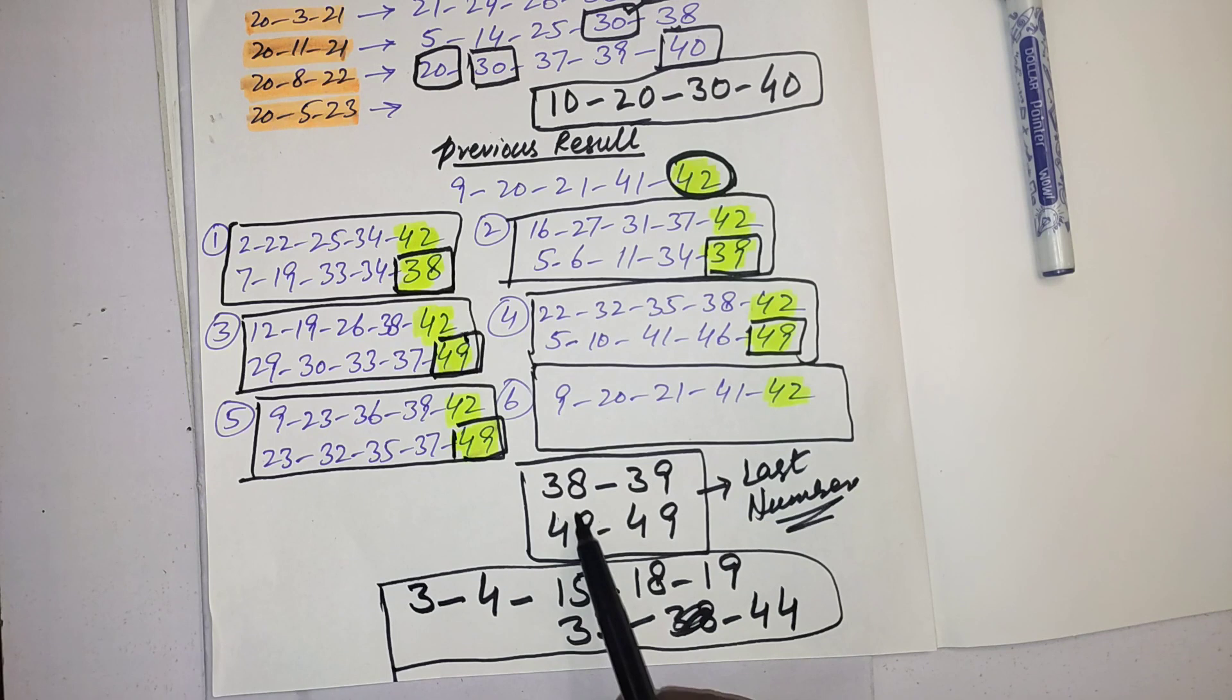38 I already mentioned here, you can see 38. So these are total 15 numbers. If you like any number from it you can choose, if you don't like you can leave it. These are most powerful numbers according to the past history.